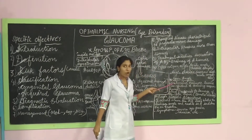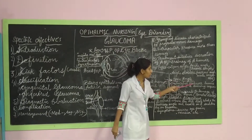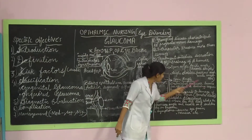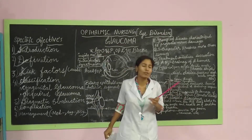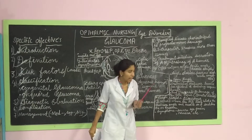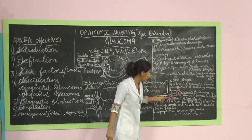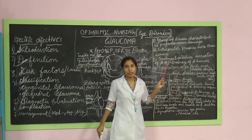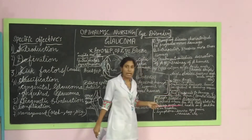In open angle Glaucoma, the trabecular meshwork becomes less efficient at draining aqueous humor. The tissue area becomes weak, meaning drainage of aqueous humor cannot occur properly. This leads to increased intraocular pressure, which damages the optic nerve of the eye. This condition is called open angle Glaucoma.